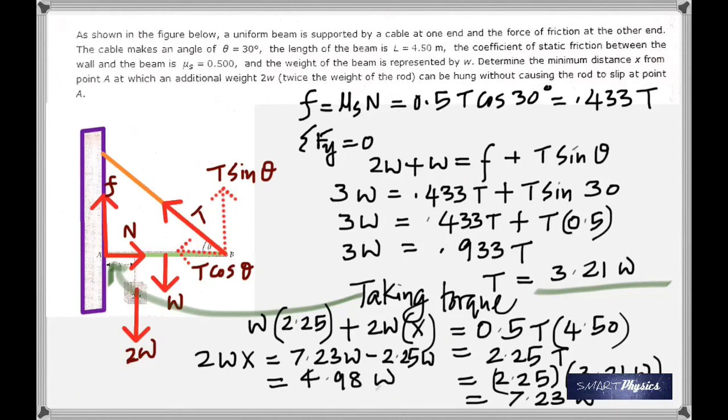4.98. The W's can be cancelled from both sides, and you get x is equal to 4.98 divided by 2, which is 2.49 meter. Well, this again is a very important question and make sure you understand how this is done.